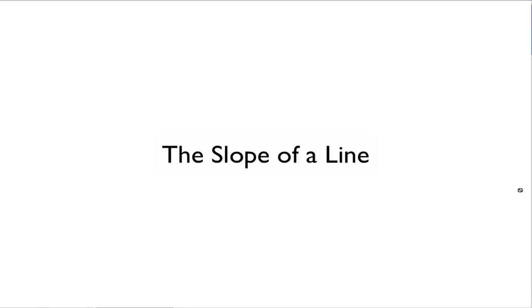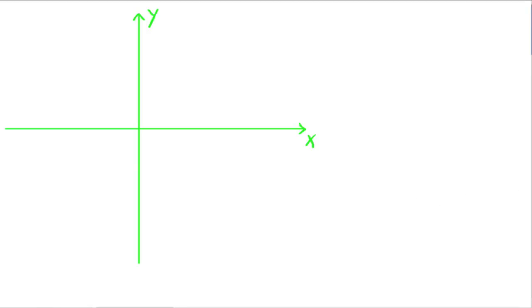Now we're going to talk about the slope of a line. Draw your axes, make sure you label x and y. Let's say we have a line, just draw one through real quick. So there's our line.